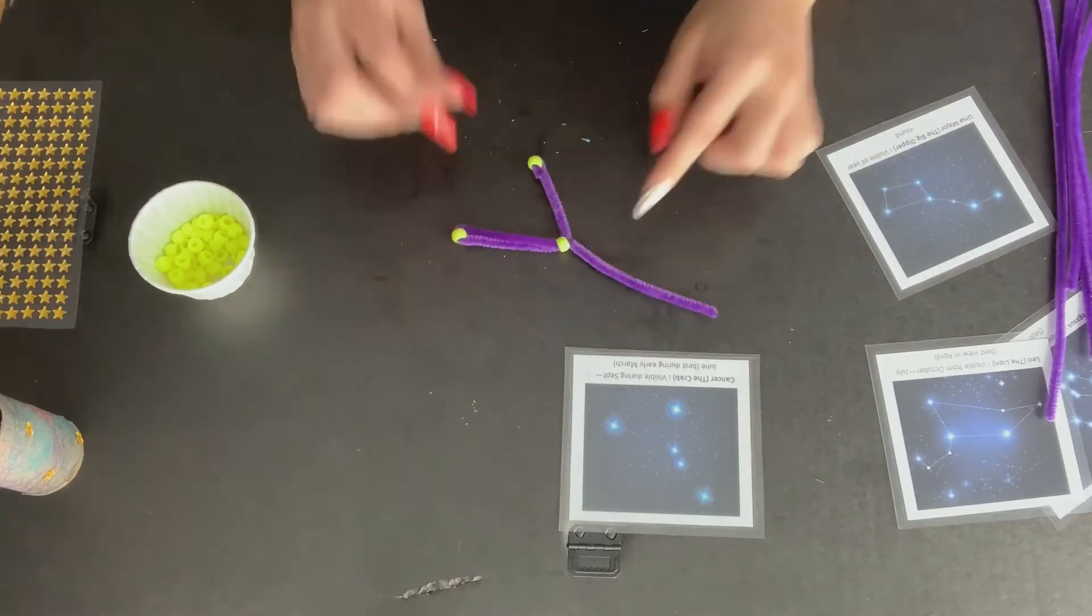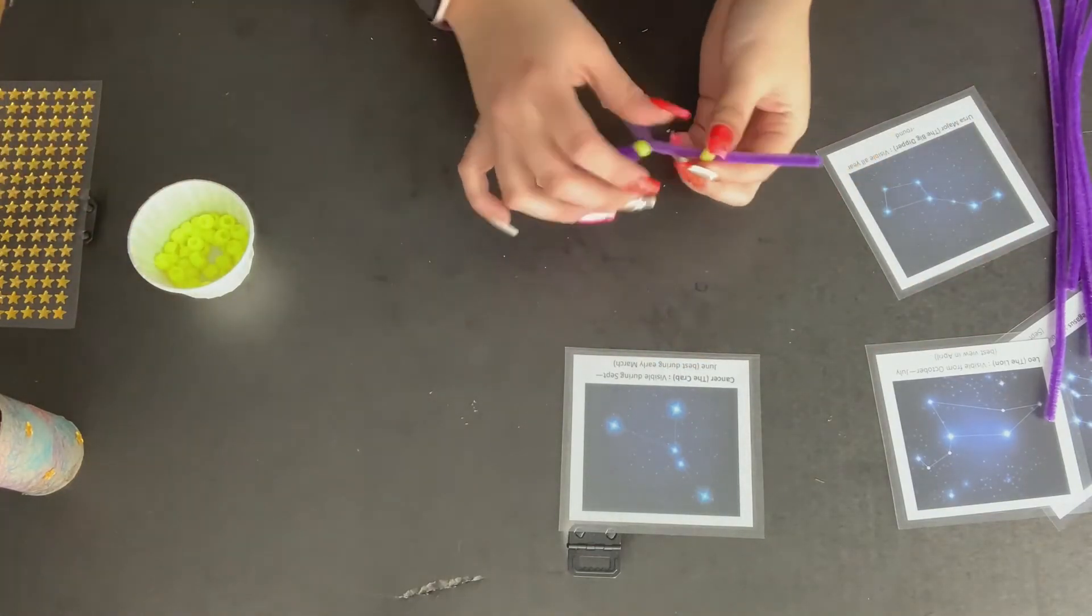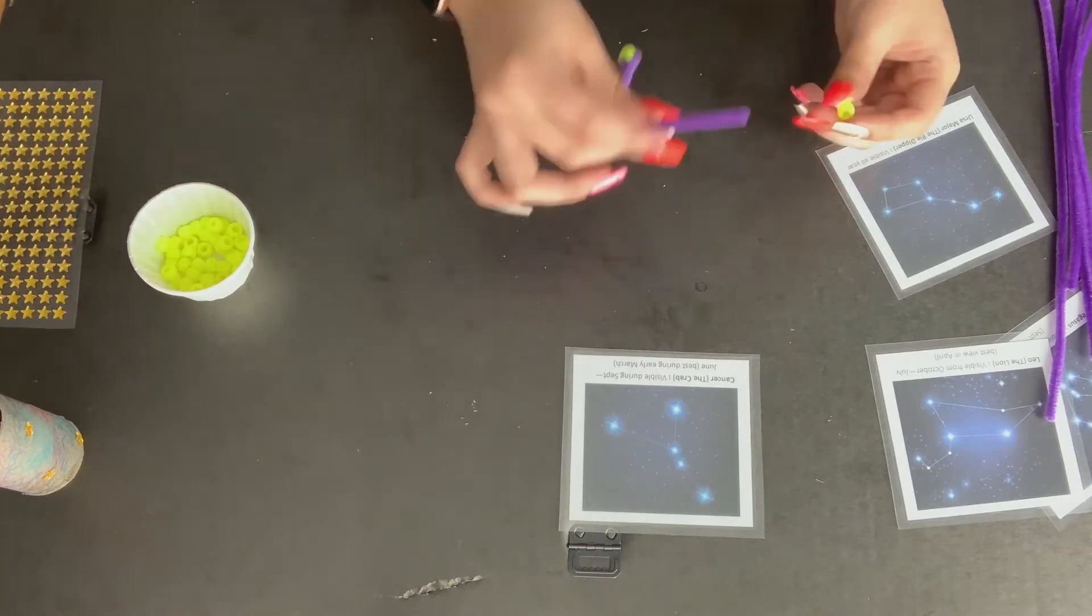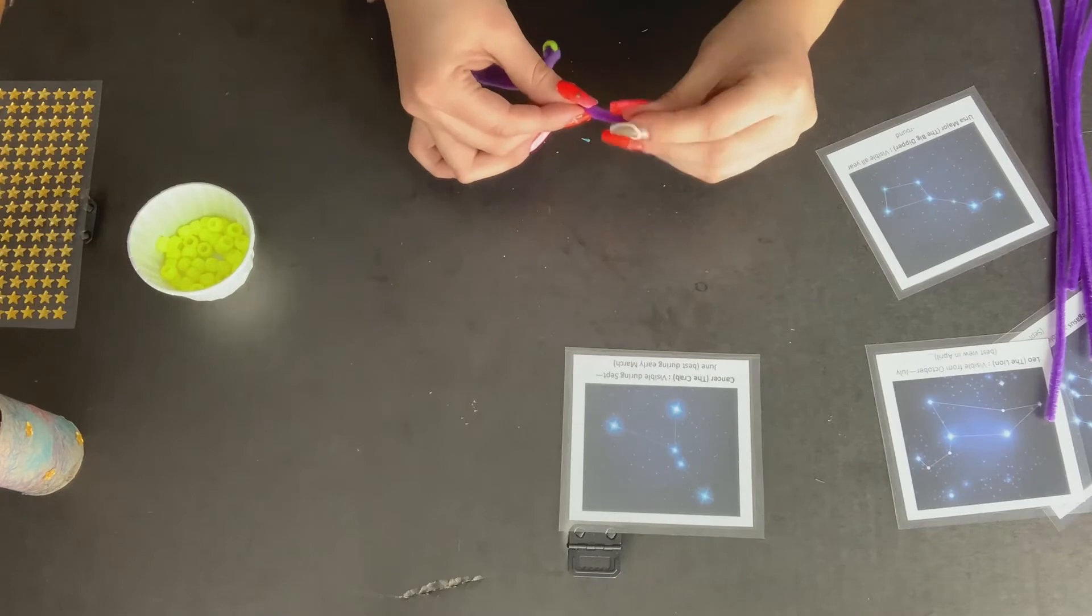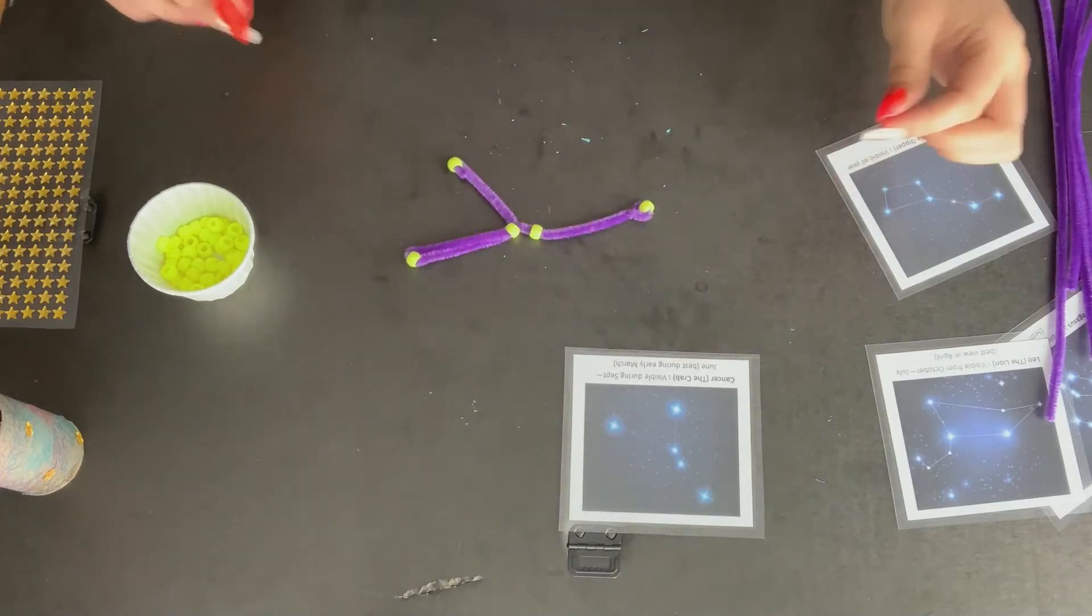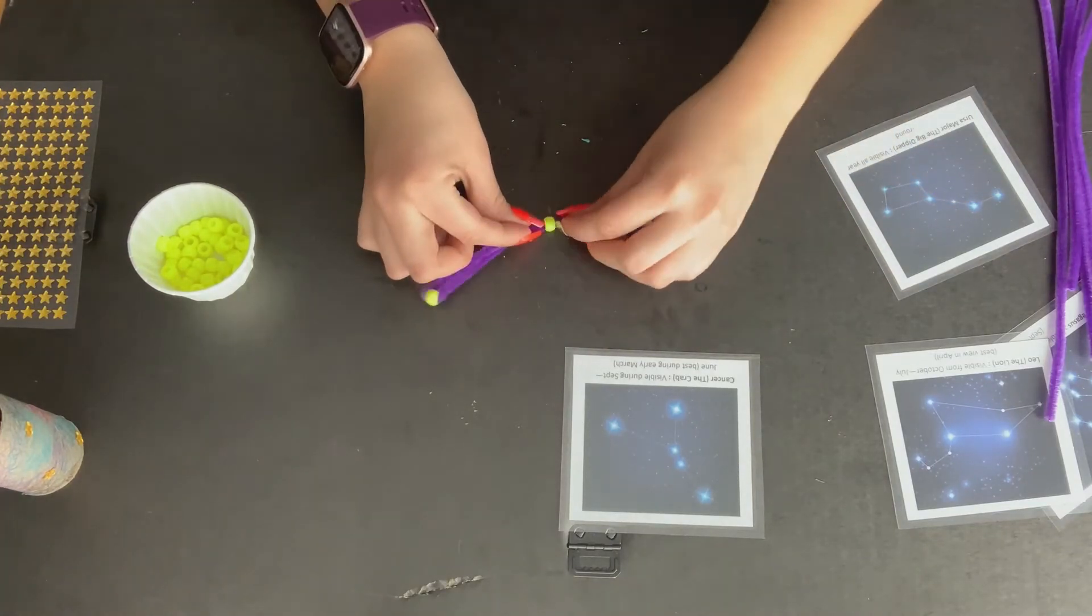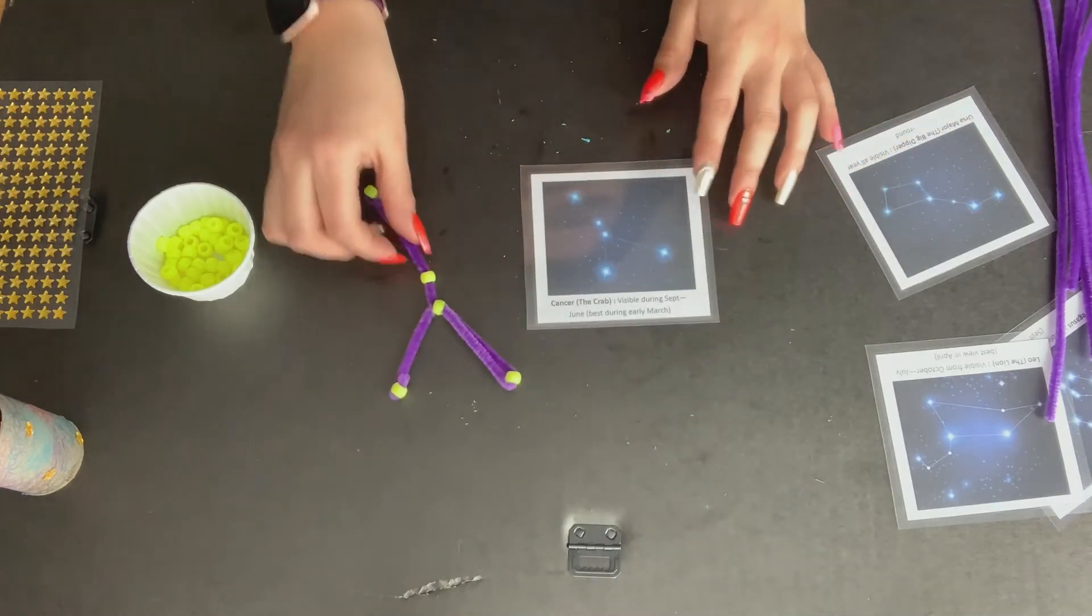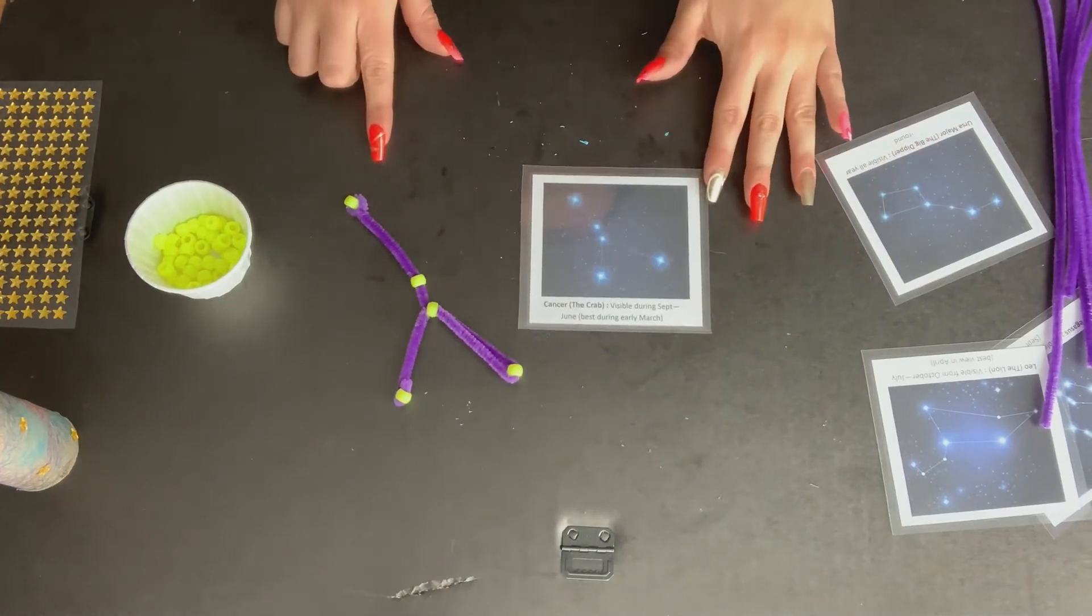Looking back and forth to my card, I'm going to use that to help me with my shape and the position of my constellations and do my best to match it to the cards. After adding all the beads, I'm going to take a look at my constellation compared to the card, and it looks pretty close.